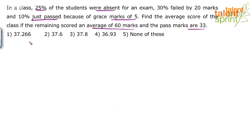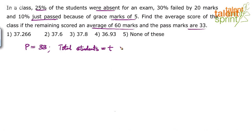Pass marks are 33. He says 30% failed by 20 marks. Let us assume total students is T. It says 30% failed by 20 marks, which means 30% of T have got 33 minus 20, which is equal to 13 marks. So, 30% of the students have got 13 marks.